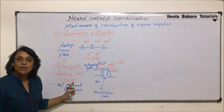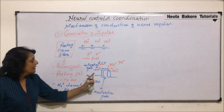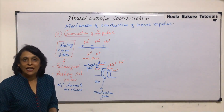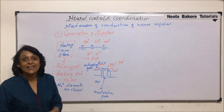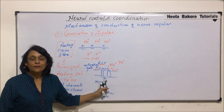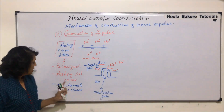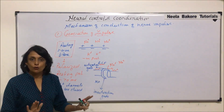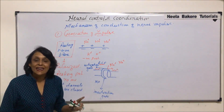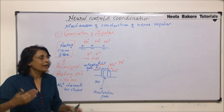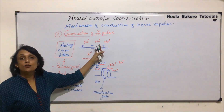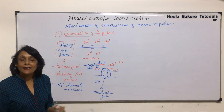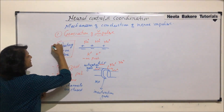At minus 70 millivolts — the resting potential — this gate is closed. It is a voltage-gated channel: the regulatory mechanism controlling opening and closing is the voltage. So at minus 70 millivolts, sodium channels are closed, there is no scope for sodium ions to come in, all sodium ions remain outside, and that is why the membrane is electropositive on the outer side. This is the situation when the membrane is in its resting stage.